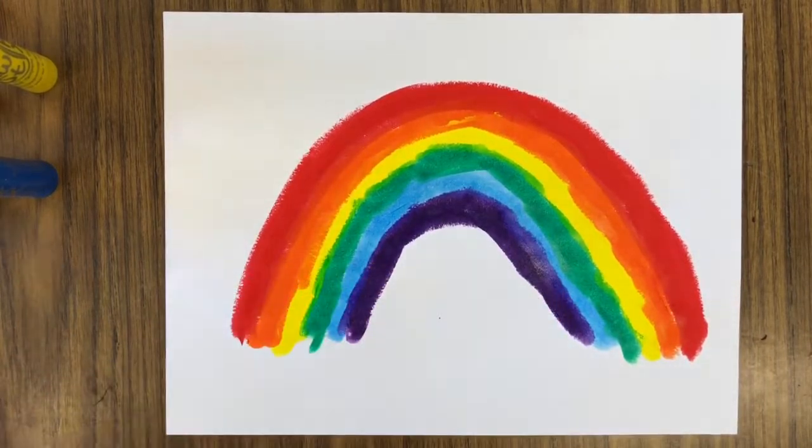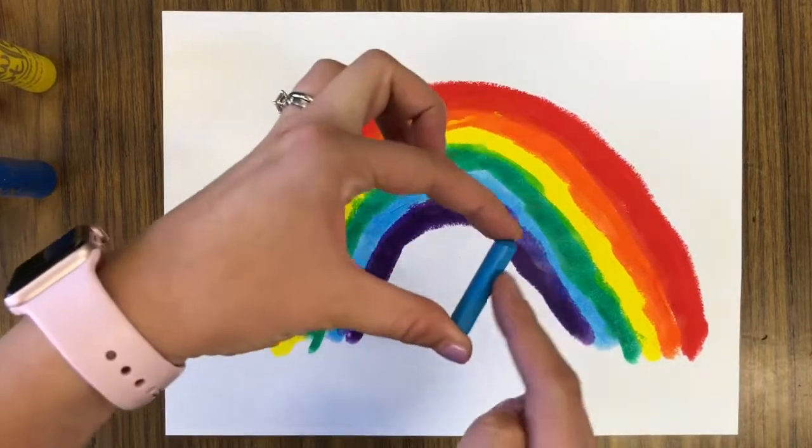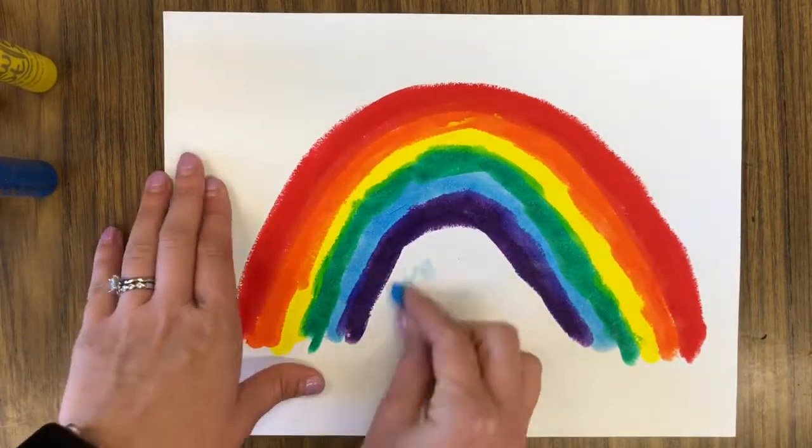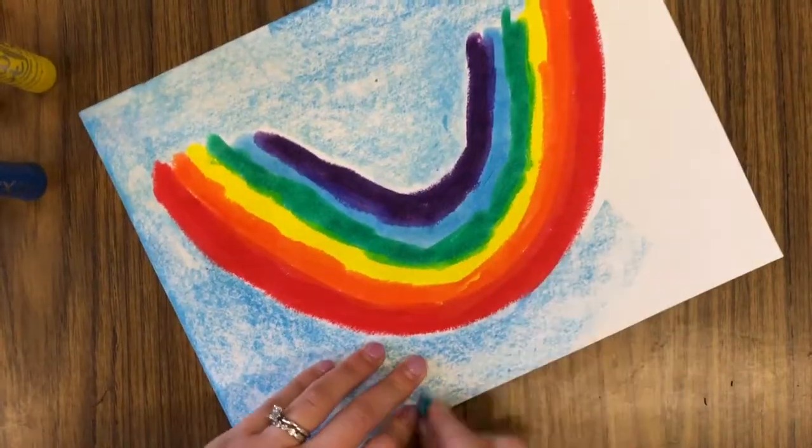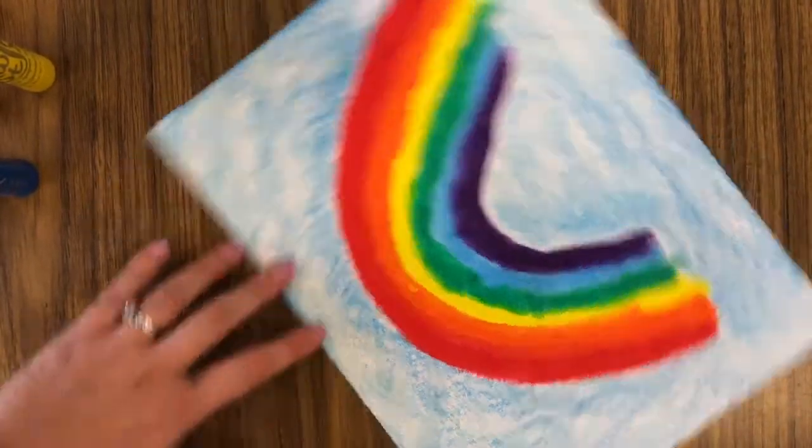When your rainbow painting is finished take a blue crayon and place it on its side on the paper. We are going to rub our crayon all over the background to create a blue sky. This is called making a crayon rubbing.